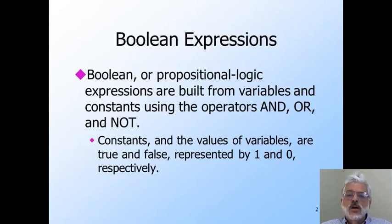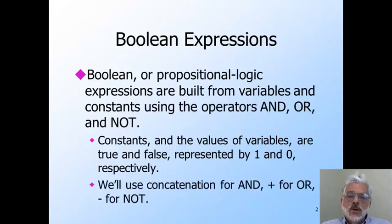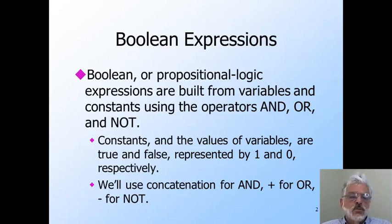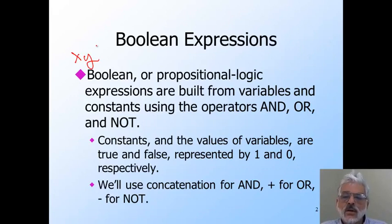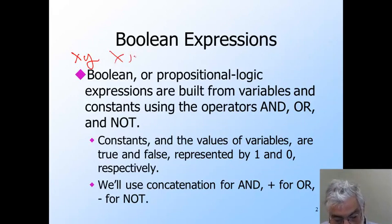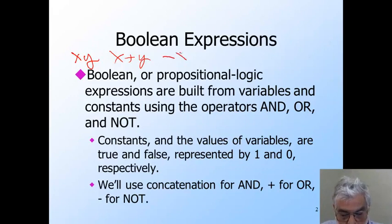The variables can only take on these two values as well. The operators AND, OR, and NOT have the usual logical meaning. When we write these expressions, we'll use concatenation — that is, no operator symbol for AND. So xy really means x AND y. We'll use plus for OR, so x plus y means x OR y, and we'll use the minus sign for NOT. So minus x really means NOT x.